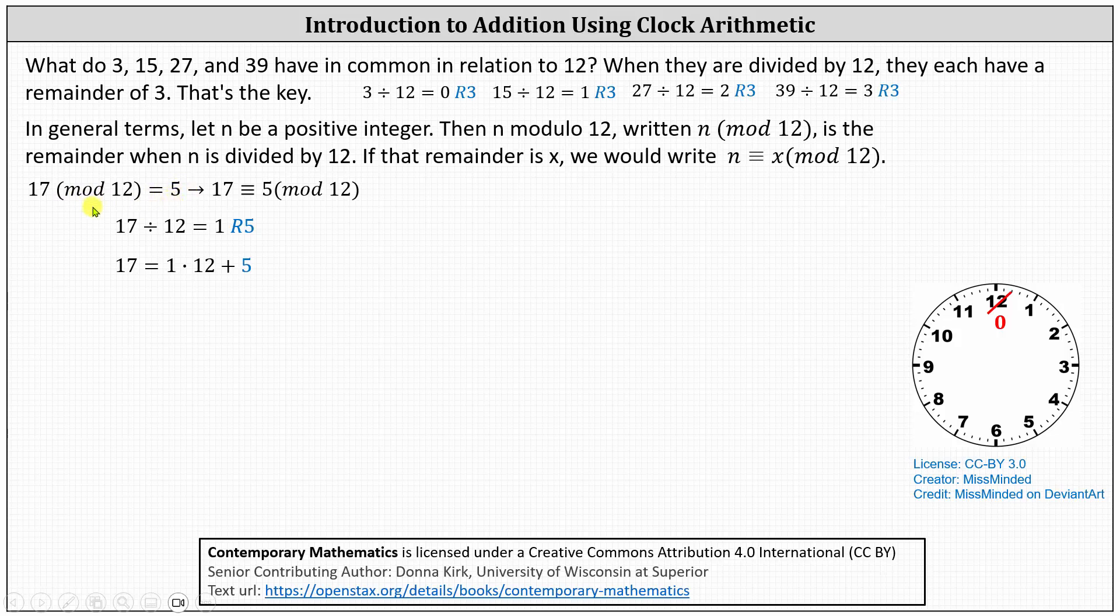And we can also state 17 is congruent to 5 mod 12. For a second example, 38 mod 12 is equal to the remainder when 38 is divided by 12. 38 divided by 12 equals 3 with a remainder of 2, indicating 38 mod 12 equals 2, as well as 38 is congruent to 2 mod 12.